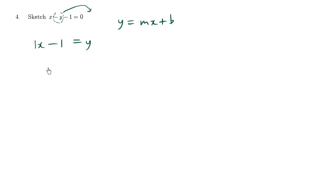Now remember there's a hidden one in front of every variable. So this is the slope. So I'm going to switch these around. I'm going to say y equals one x minus one. And this here you can see is the slope. And this here you can see is the y-intercept. So now we can sketch it.